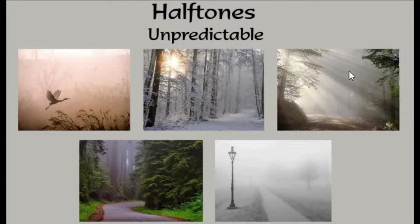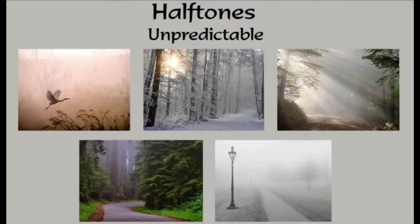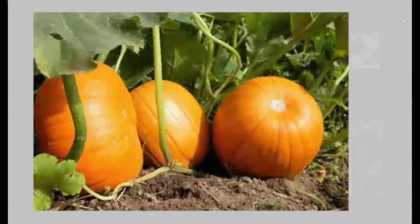Here the environment is responding to the light in a way that is unpredictable. Nevertheless, if we learn to read the values — the halftone values — we can find them. In a very foggy morning, we do have a direct light coming through the fog, but the fog is changing the environment. That's what I mean by how the environment responds to the light. So if we think of the halftones as predictable and unpredictable, we can begin to see the difference between what we can expect to see and what we just need to learn the values for.